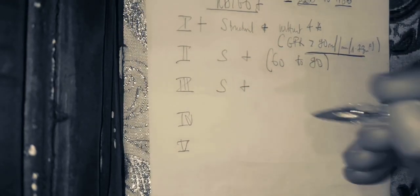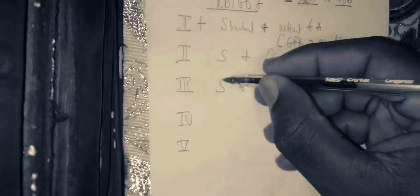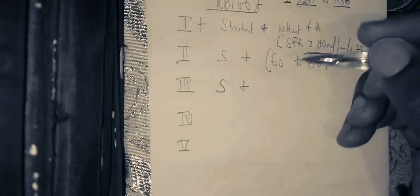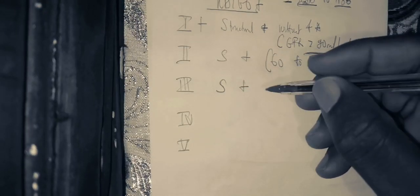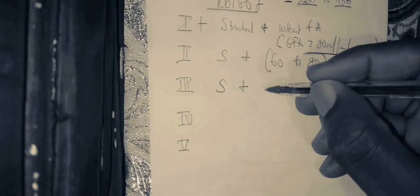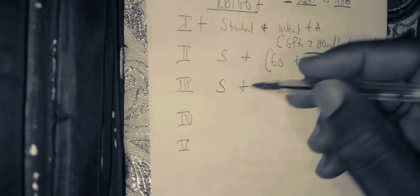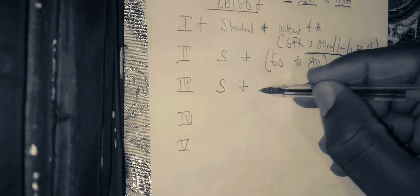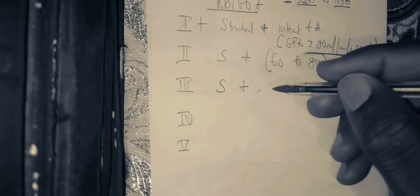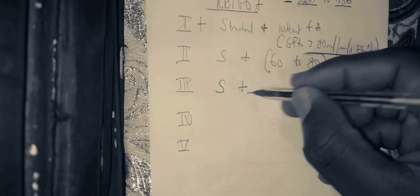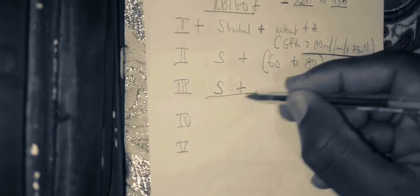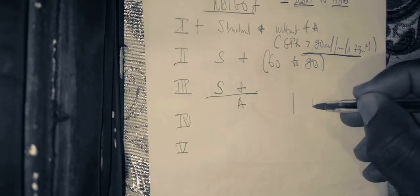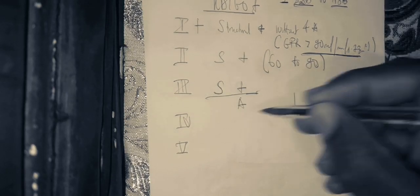In the CKD Stage 3, you have a structural abnormality, and we need to know the functional parameters. Stage 3 is divided into two: you have CKD Stage 3a and CKD Stage 3b.